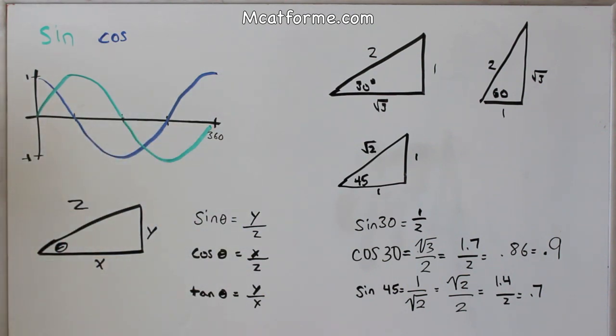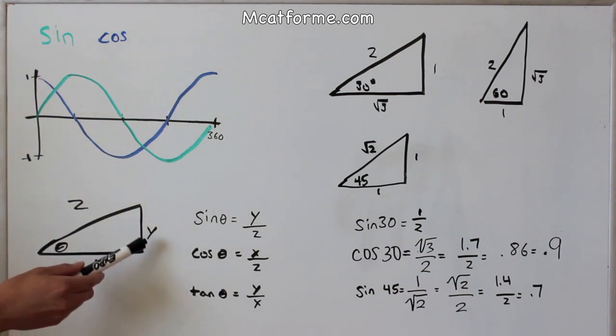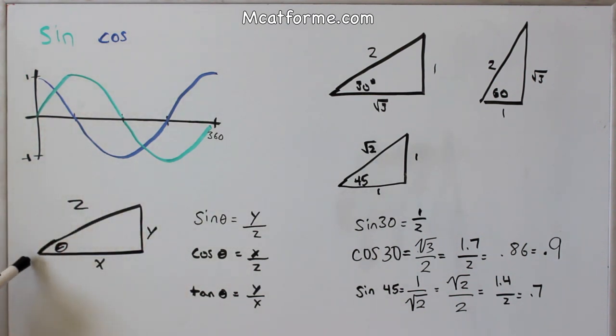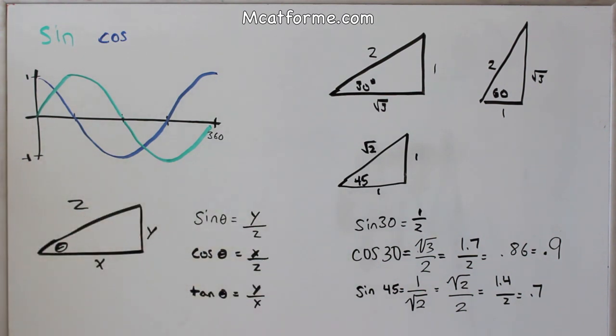So now what exactly is sine, cosine, and tangent? Sine will be opposite over hypotenuse, so that will be y over z. Cosine is going to be the adjacent one, so x over z. And tangent is just opposite over adjacent. We don't need to worry about arctan or anything like that, but these are the only ones we'll need to work with.